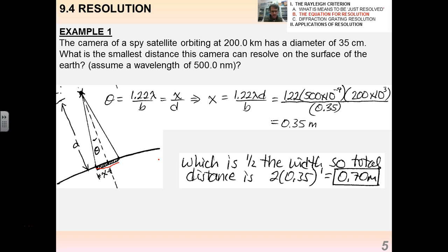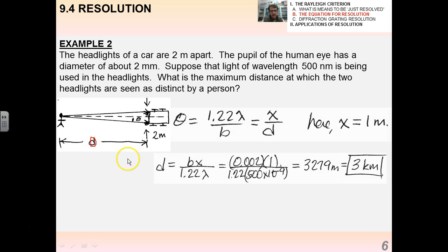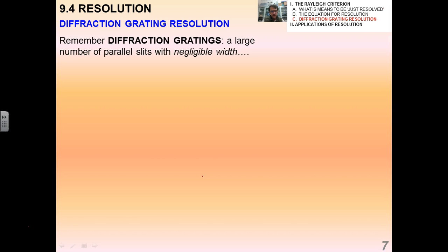Try this one. The headlights of a car are two meters apart. The pupil of the human eye has a diameter of about two millimeters. What's the maximum distance at which the two headlights are seen distinct or just resolved by a person? Again here's my diagram, this again should really be big D. And then I just apply the equation. I'm solving for big D which is bx over 1.22 lambda, and I get about three kilometers.